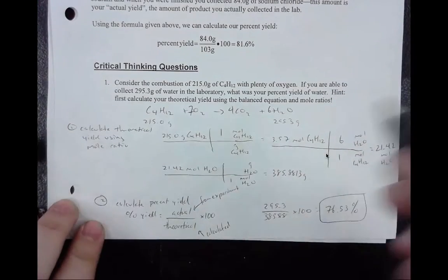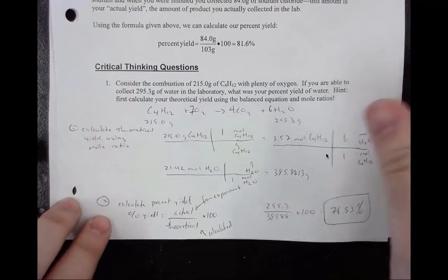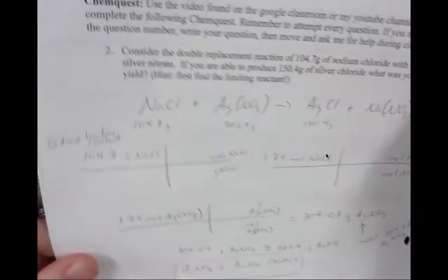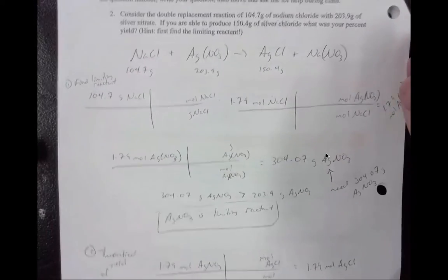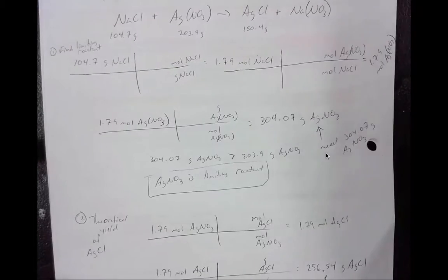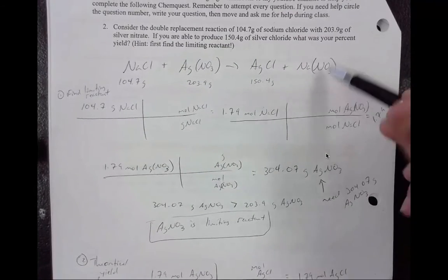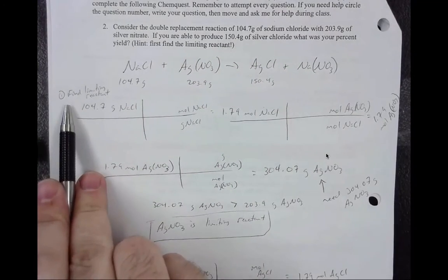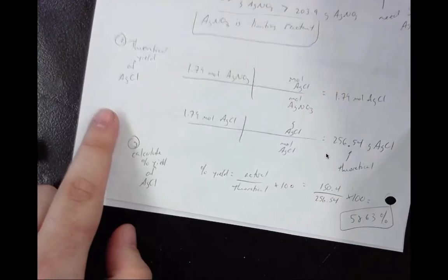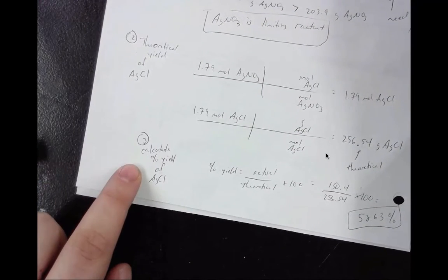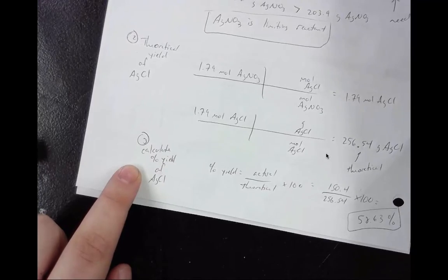These are the most basic steps. Question 2 introduces something we've already done in the last packet, the last ChemQuest, limiting reactants. So if it doesn't tell you what the limiting reactant is first, the first thing you would have to do is find the limiting reactant and then move into the theoretical yield of silver chloride and then calculate the percent yield of silver chloride.